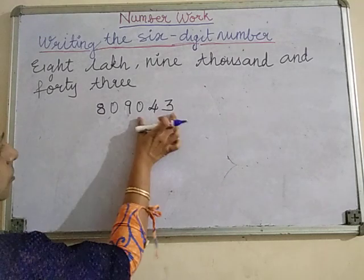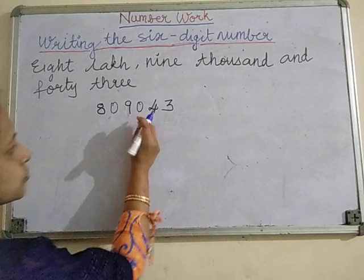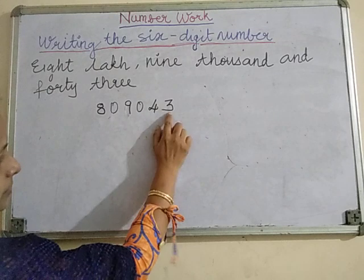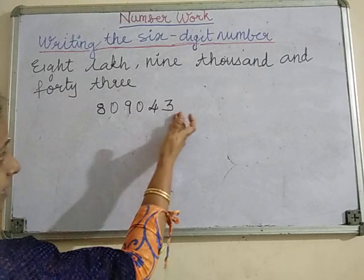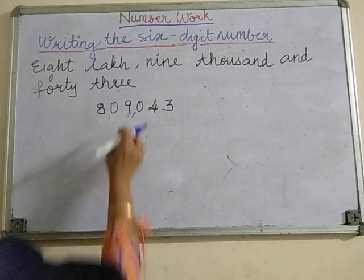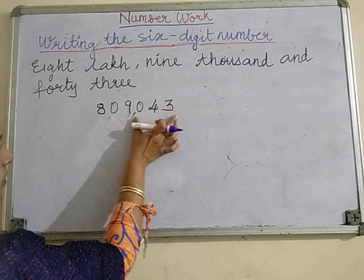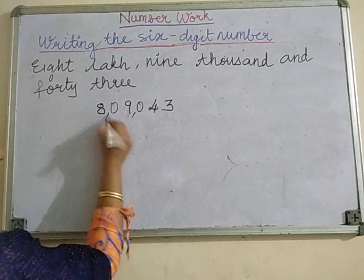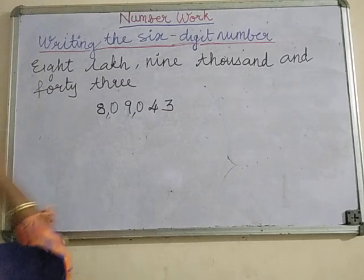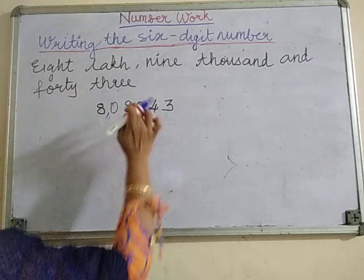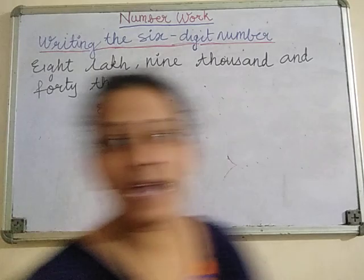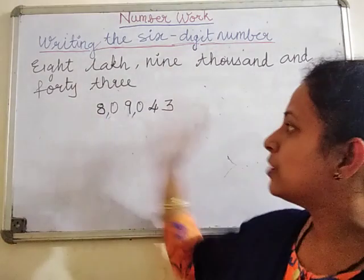In our Indian system, we are supposed to put the comma. After the first three places from the right, put a comma. Then after every two digits further. So the pattern is: first three digits from the right, then two digits, then two digits, and so on. Remember: after the first three digits, it will always be two digits in the Indian number system.